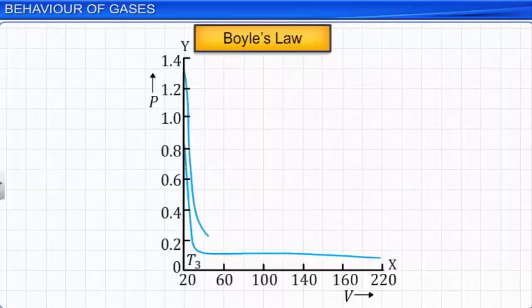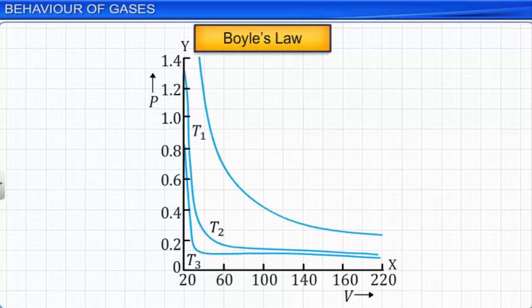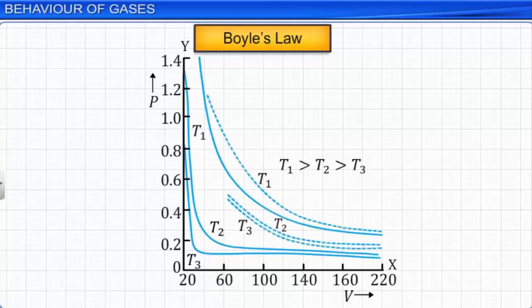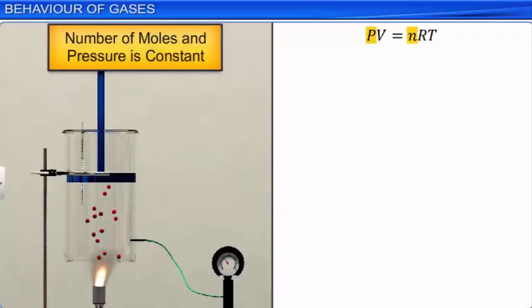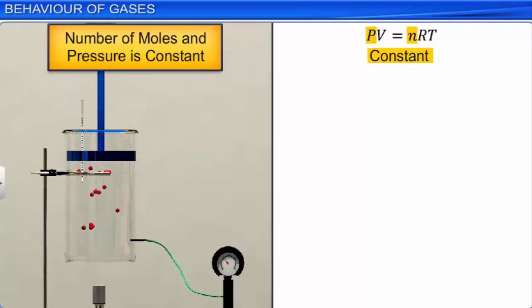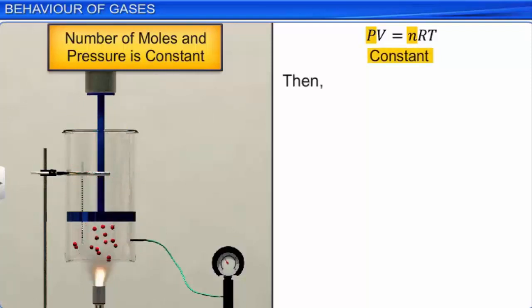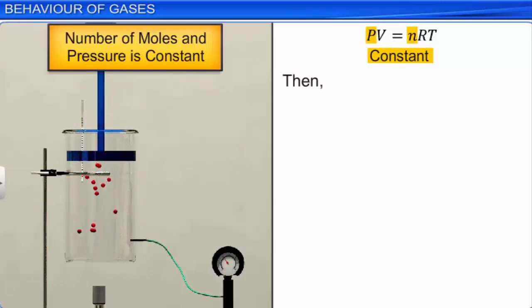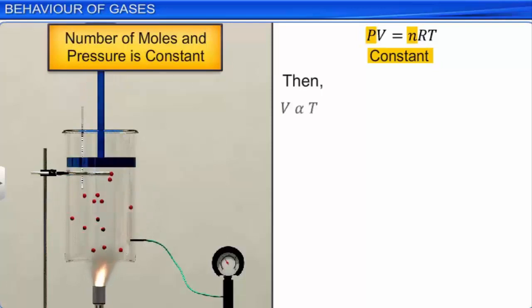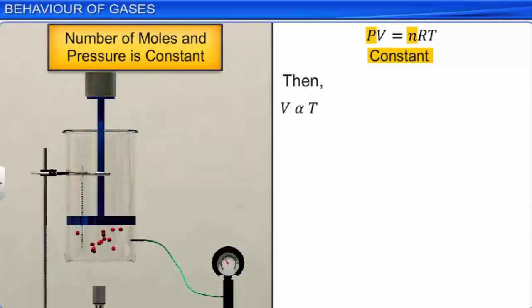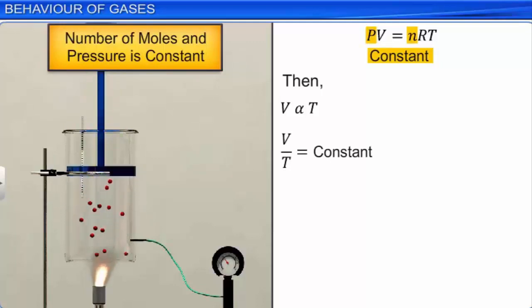According to Boyle's law, the graph between pressure versus volume is shown in the figure. Boyle's law is also satisfied at high temperatures and low pressures. If the number of moles and pressure of a given gas are kept constant, then the ideal gas equation can be modified as: volume of a gas is directly proportional to its absolute temperature — that is, V ∝ T and V/T is constant. This is called Charles' law.